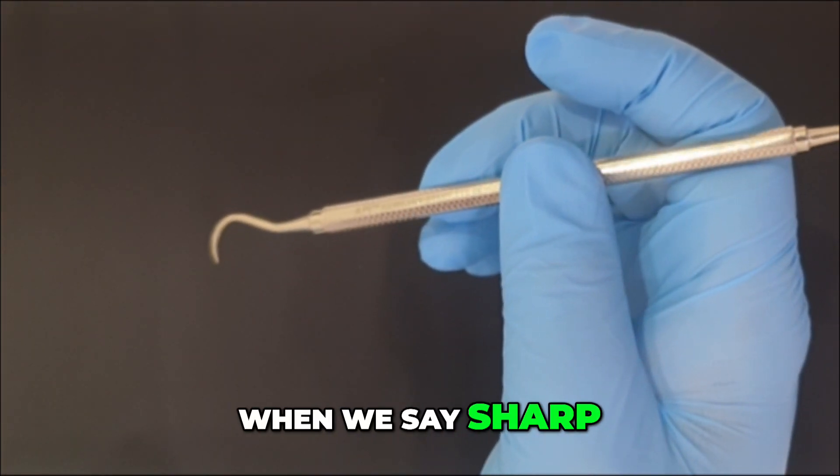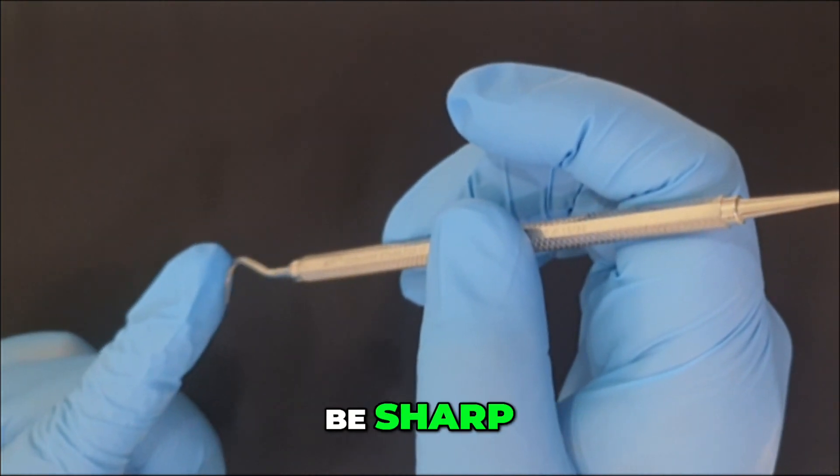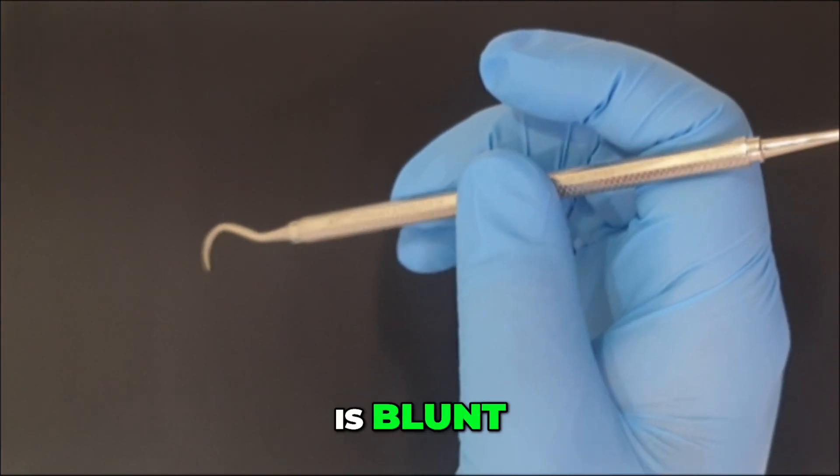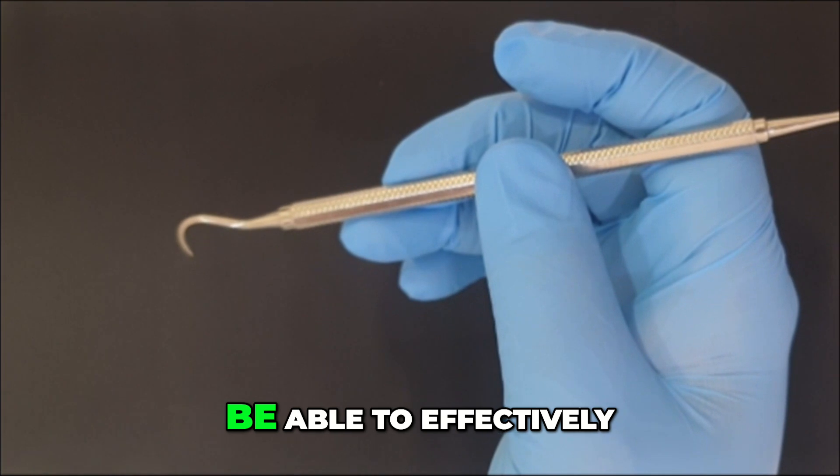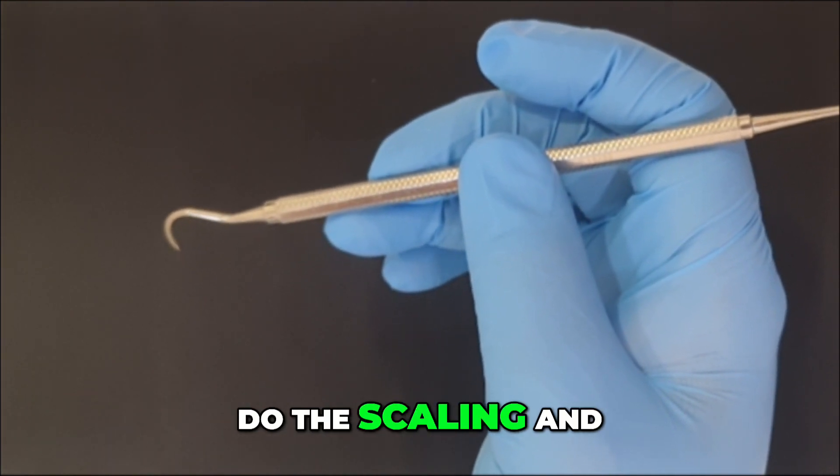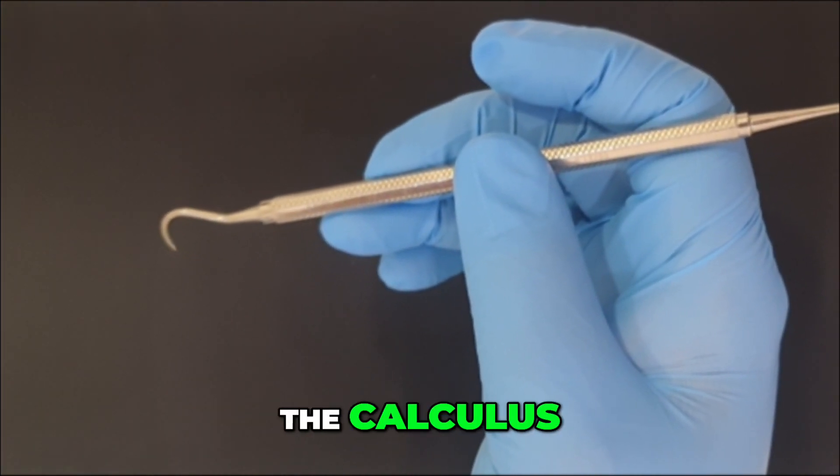When we say sharp, the cutting edge should be sharp. If the cutting edge is blunt, then we will not be able to effectively do the scaling and instead of doing scaling, we will be burnishing the calculus.